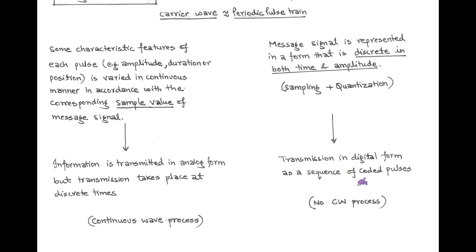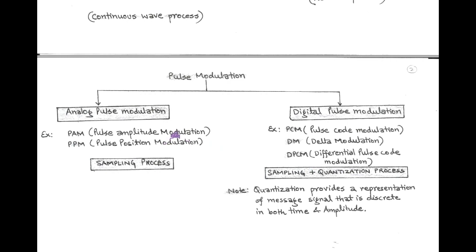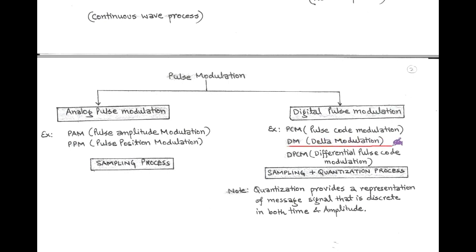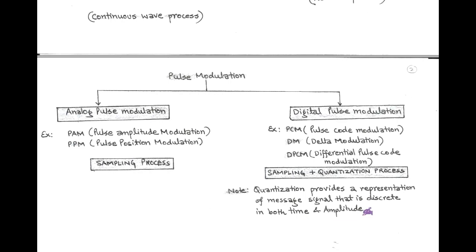The examples of analog pulse modulation are PAM, that is called pulse amplitude modulation, and PPM, that is called pulse position modulation. While the examples of digital pulse modulation are PCM — pulse code modulation, DM — delta modulation, and DPCM — differential pulse code modulation. The main point here is the quantization process, which represents the signal in discrete form both in time and amplitude — that is called a digital signal.